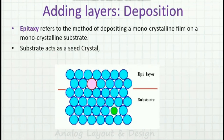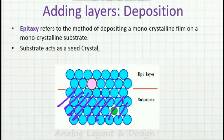Deposition is a method to add layers — it is a technique wherein you grow an epitaxial layer. You deposit a monocrystalline film on a monocrystalline substrate. This layer that gets formed is called the epi layer. The substrate itself acts like the seed crystal so that the crystal lattice is maintained.